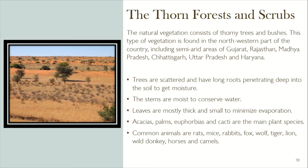Thorn Forest and Scrubs: the natural vegetation consists of thorny trees and bushes. This type of vegetation is found in the northwestern part of the country, including semi-arid areas of Gujarat, Rajasthan, Madhya Pradesh, Odisha, Uttar Pradesh, and Haryana. Trees are scattered and have long roots penetrating deep into the soil to get moisture. Stems store water; leaves are mostly thick and small to minimize evaporation. Acacia, palm, euphorbia, and cacti are the main plant species. Common animals are rats, mice, rabbits, fox, wolf, tiger, lion, wild donkey, horses, and camels.